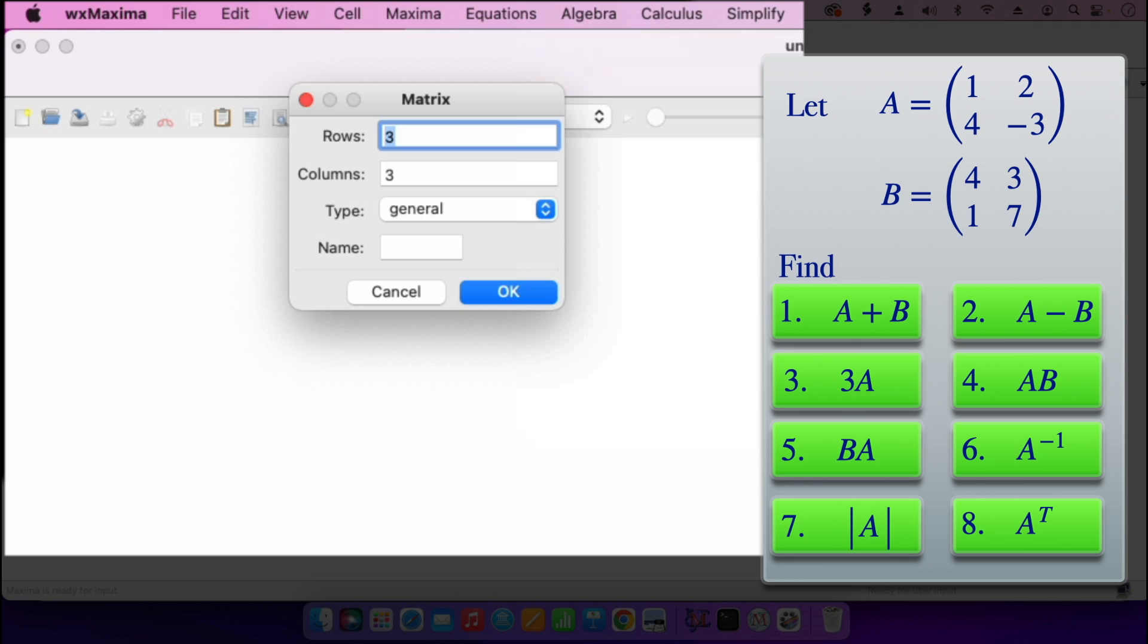The matrices that we have there, they are two by two. So it is two rows, two columns, and I'll call the matrix A. Then when I'm done, I click on OK.